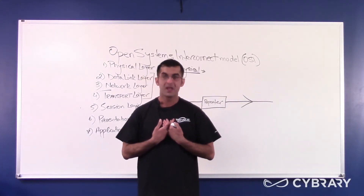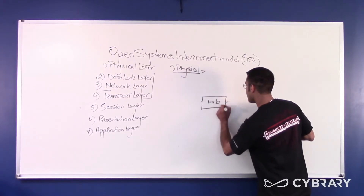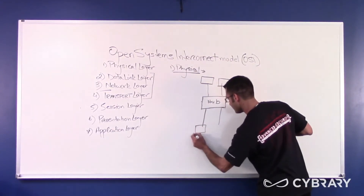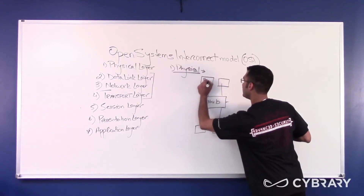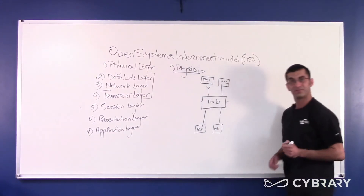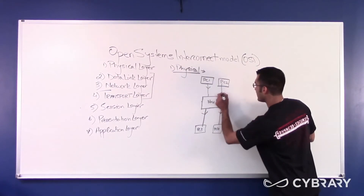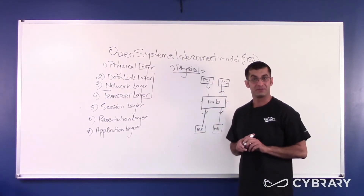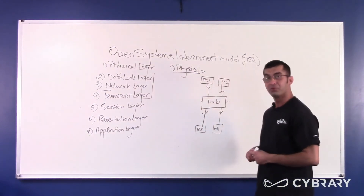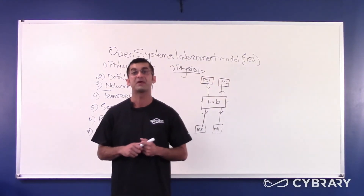A hub is nothing more than a multi-port repeater. If we connect three or four PCs to a hub — PC1, PC2, PC3, and PC4 — and PC1 sends a transmission, the hub will flood the signal out every other port to all devices except the port that originated the signal. PC1 sent the signal, so you don't want PC1 receiving the same signal back. A hub floods the signal out all other ports except the one that originated the signal.